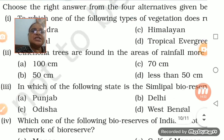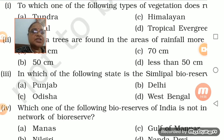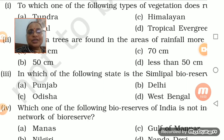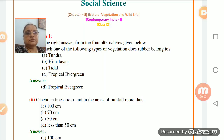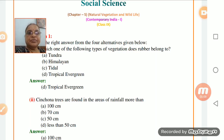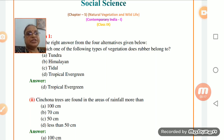We have completed the chapter - let's discuss the question and answers. With this, your syllabus for Class 9 geography will be over. So students, let's discuss the question and answers. We have completed Chapter 5 - Natural Vegetation and Wildlife. The first set of questions is MCQs.